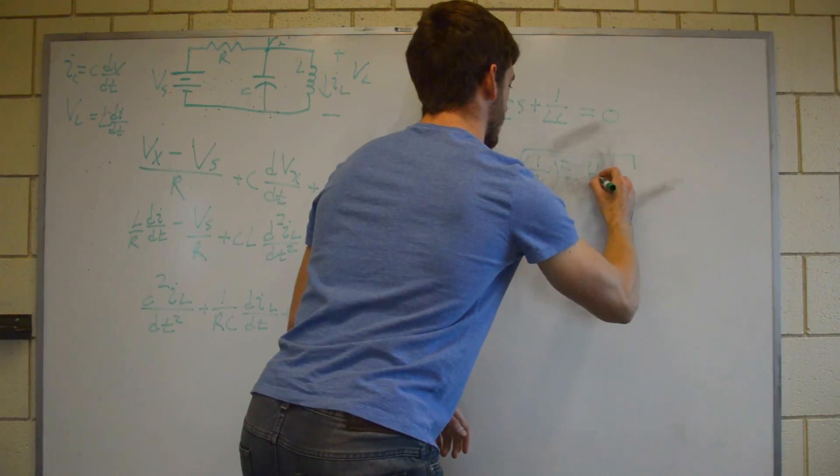So we're going to have S squared plus 1 over RC times S plus 1 over LC equals 0. So now we just have this equation and we want to solve it for S. That's pretty easy. It's just a quadratic formula at this point.